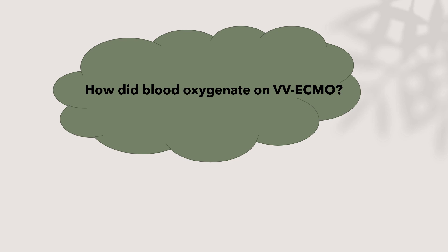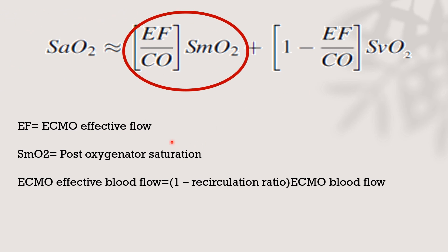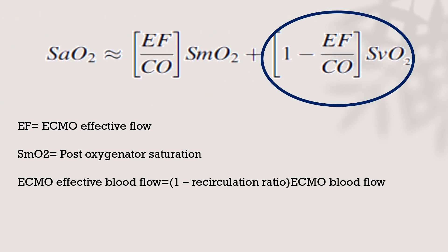The question is: how is blood oxygenated on VV ECMO, and how is saturation on ECMO calculated? The equation has four important parameters: EF (effective ECMO flow), cardiac output, post-oxygenator saturation, and venous oxygen saturation. The equation is divided into two parts. The first part is the portion taken by the ECMO circuit and oxygenated — that's why we multiply effective ECMO flow divided by cardiac output, then multiply by post-oxygenator saturation. The second portion bypasses the ECMO circuit and goes directly to the lungs without being oxygenated by the oxygenator, which is why we multiply by venous oxygen saturation.